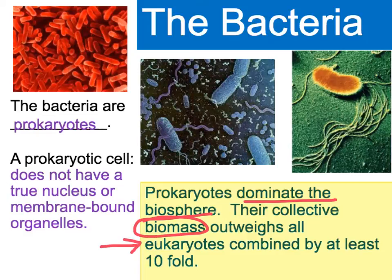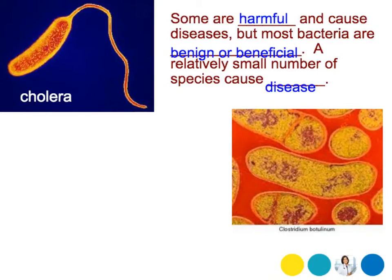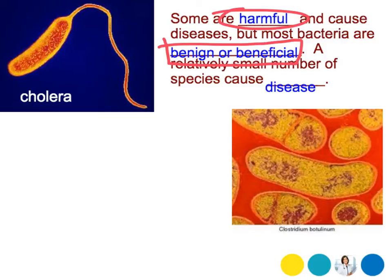Consider that our own bodies have more bacteria than cells. Some bacteria are very harmful and cause disease, but most are benign or beneficial. Benign means they're not dangerous at all. So very, very few actually cause disease.